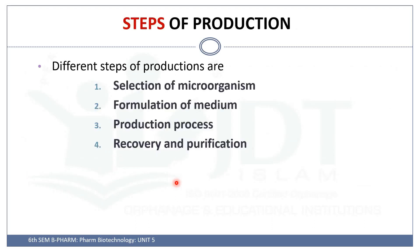Now let's see the steps of the fermentation process for the production of citric acid. The steps are: selection of microorganisms, formulation of the media, the production process including method and control of temperature and pressure, and finally recovery and purification.